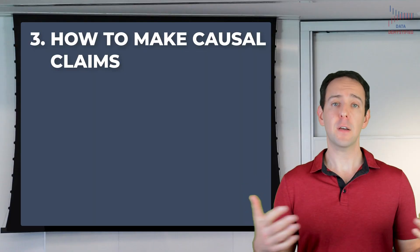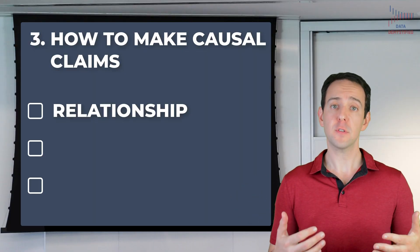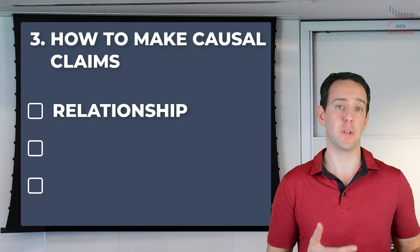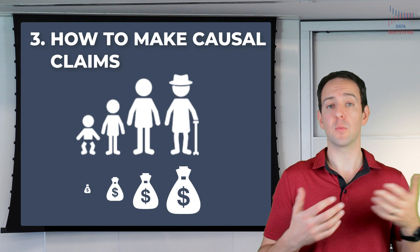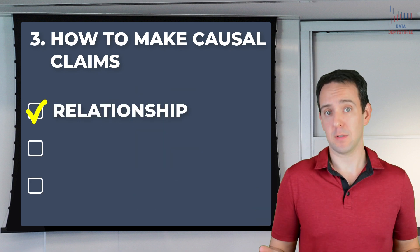Let's get back to the intuition of causality. To make a causal claim, you need three things to be true. First, you need to observe a relationship of some kind, like a correlation. That's right — even though a correlation doesn't necessarily imply causation, you do need a relationship of some kind to make a causal claim. So if we see that age and wealth are related to one another, that checks our first box.